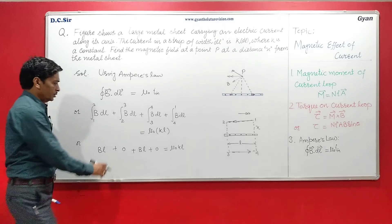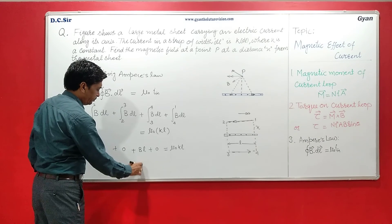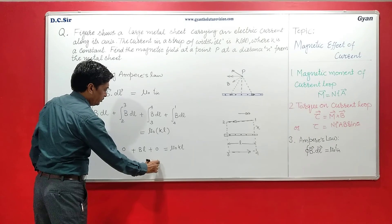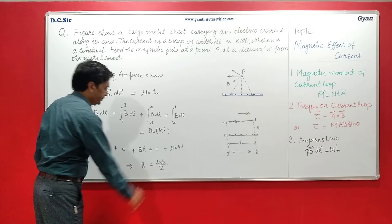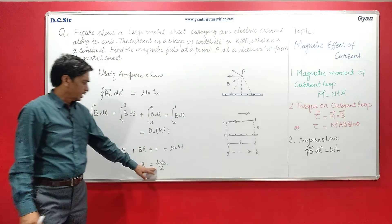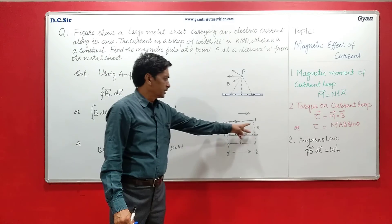So this will be 2B·L is equal to μ₀·K·L, so B is equal to μ₀·K upon 2. Now here the factor B is independent on the distance X.